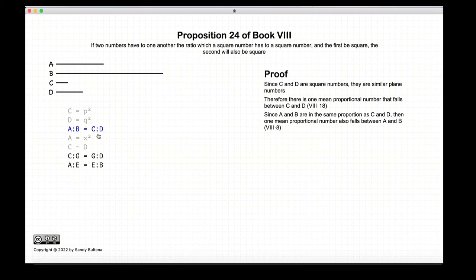And since A to B is equal to C to D, then A to B also has one mean proportional number that falls between A and B, and that's from Proposition 8 of this book.